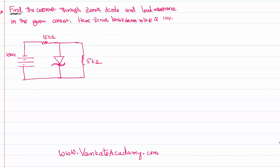Hello everyone, welcome to this video lesson. In this video lesson, we would like to solve a problem based on the Zener diode concept. What we have to find out is what is the current through the Zener diode and what is the current through the load resistance in the given circuit. It is given that the Zener breakdown voltage is 10 volts.